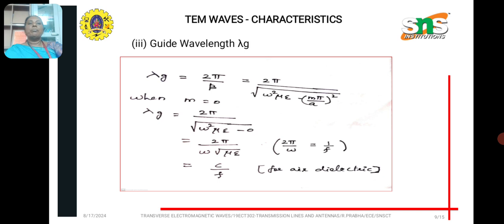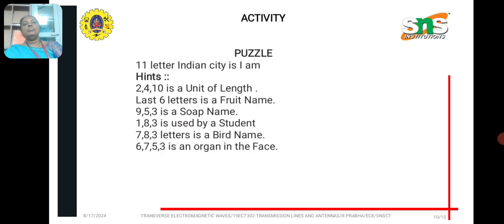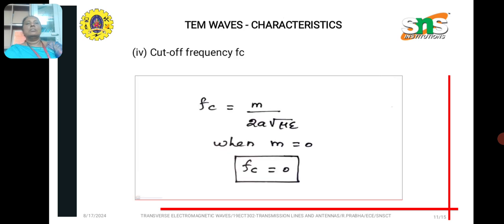So, it is 2 pi, omega is substituted as 2 pi F. So, 2 pi, 2 pi get cancelled, we have C by F.